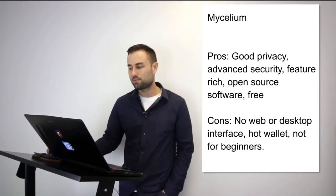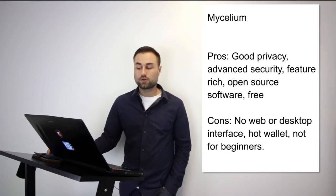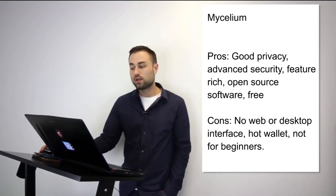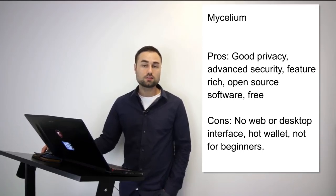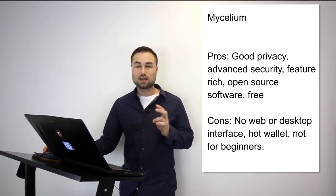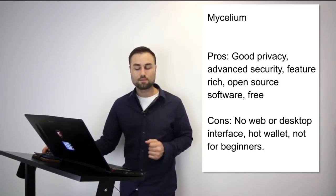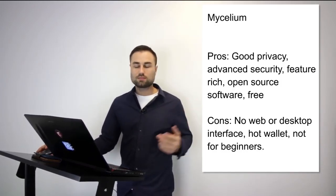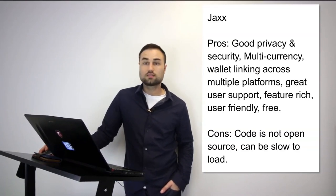Number two is Mycelium — a more advanced variation. Currently it's only for Bitcoin but they have plans for multi-currency support with Ethereum next. It works for both Android and iPhone. Pros: great privacy, advanced multi-signature security requiring multiple touch points, open source, and free. Cons: no web or desktop interface, it's a hot wallet, and it's not great for beginners. I've used it — the user interface is really good, though it's not my go-to wallet.